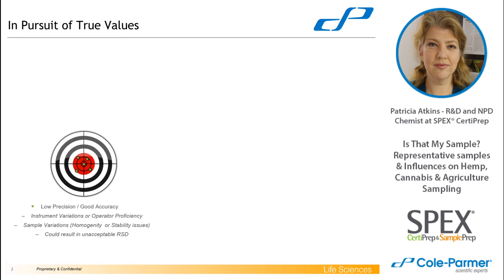If you're thinking about good accuracy, that's when your numbers are near your target. So if you are aiming for five parts per million and you're getting four, five, six — you're getting them in a good range, sort of hitting that target, but they're not on top of each other. So you're getting really good accuracy but kind of low precision. This can be due to instrument variations, like an auto-sampler or operator proficiency — maybe the operator is hand-injecting slightly different amounts each time. It can be sample variations — maybe your sample's not homogeneous or there are stability issues — leading to an unacceptable RSD, or relative standard deviation.